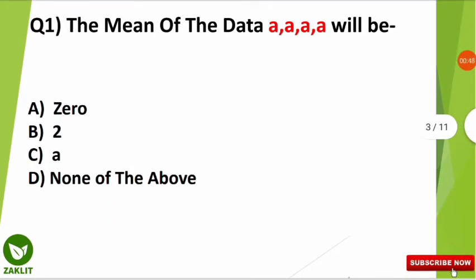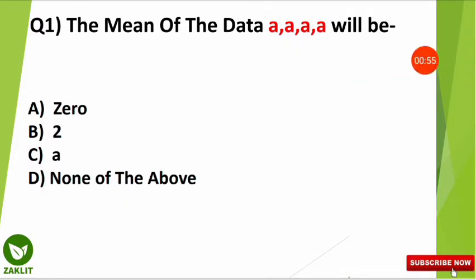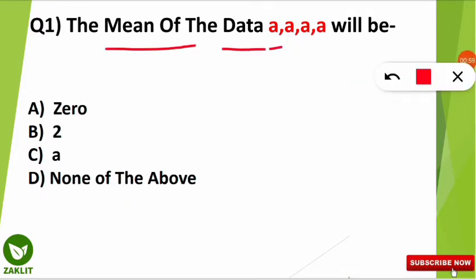These questions will be very easy and can be solved within seconds — that's why I'm calling them chocolate questions. The first question is: what is the mean of the data a, a, a, a? There are four data values, all equal to a. Think about it for a moment, then I'll reveal the answer.